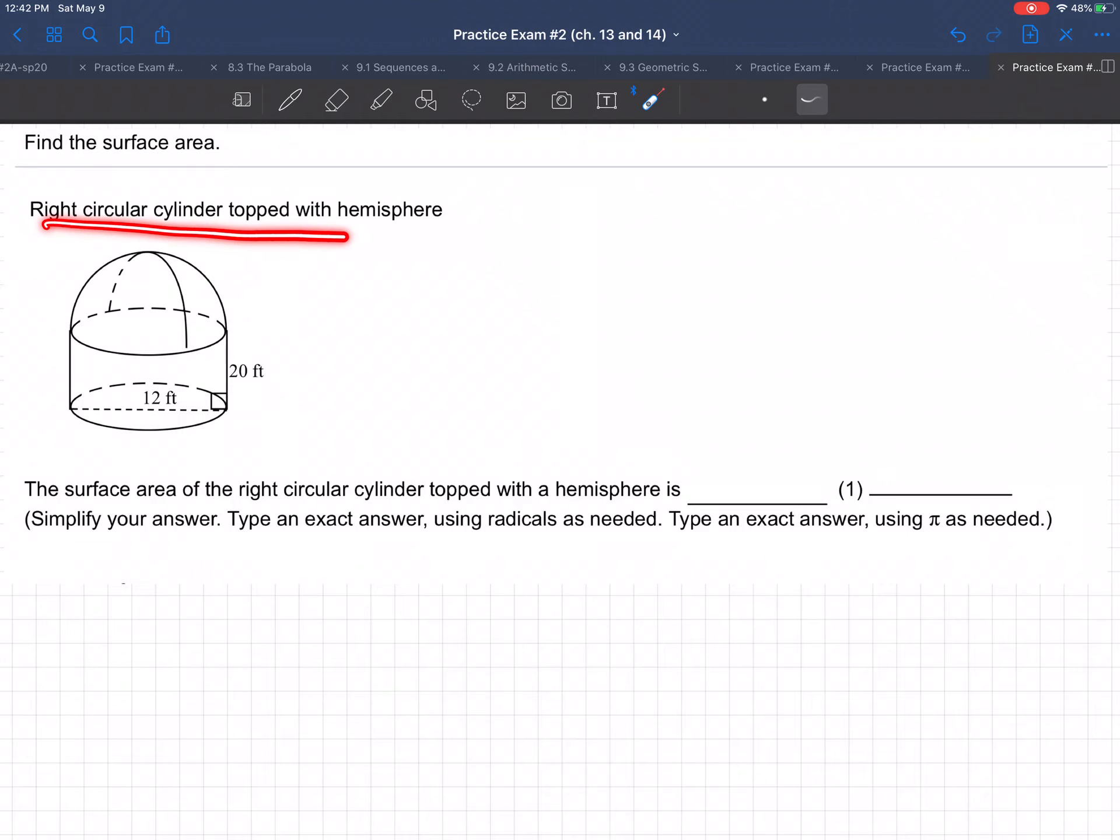Find the surface area, right circular cylinder topped with a hemisphere. So it's a half a sphere, that's what a hemisphere is, on top of a right circular cylinder.